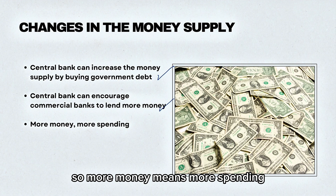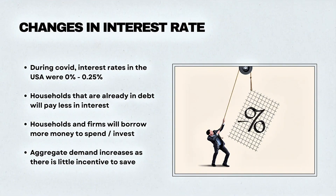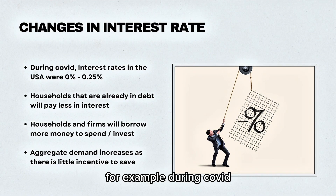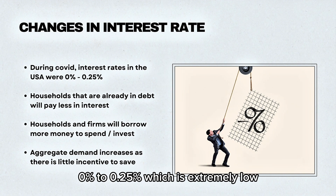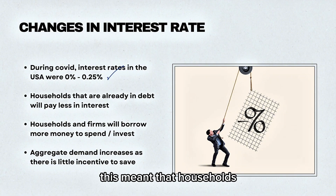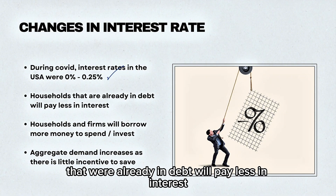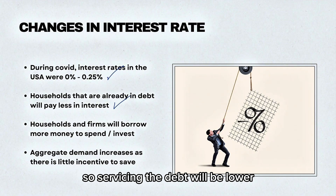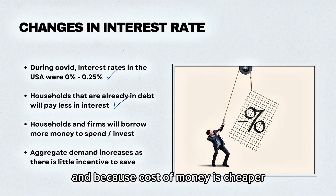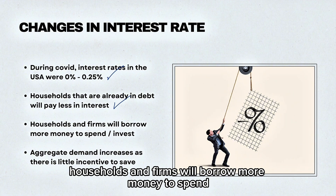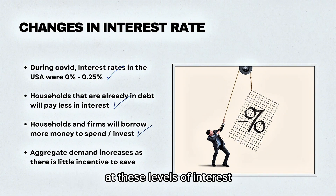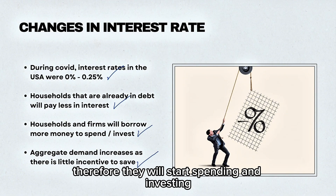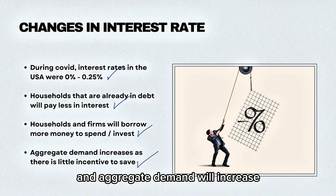The central bank can encourage commercial banks to lend more money by changing the interest rates, so more money means more spending. For example, during COVID, the US government decreased interest rates to between 0% and 0.25%, which is extremely low. This meant that households in debt would pay less in interest, servicing the debt would be lower, and because the cost of money is cheaper, households and firms will borrow more to spend or invest. There is also very little incentive to save at these levels, so aggregate demand will increase.